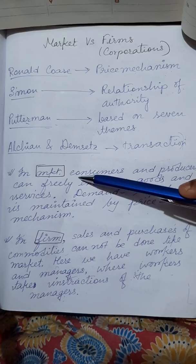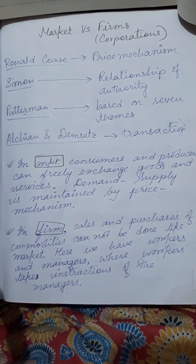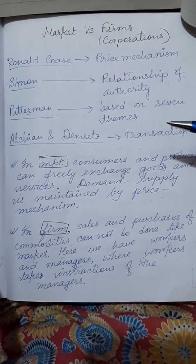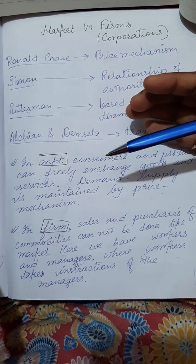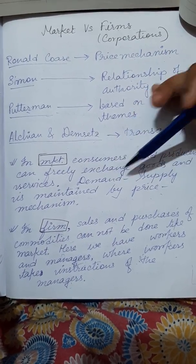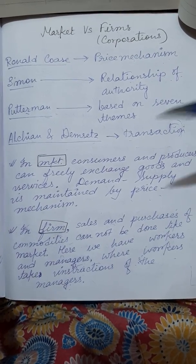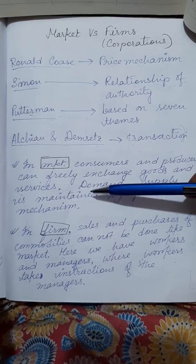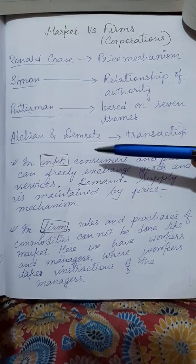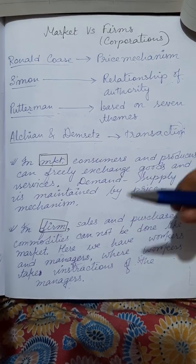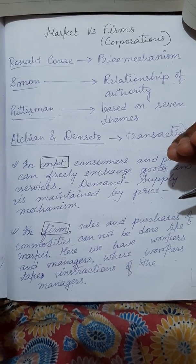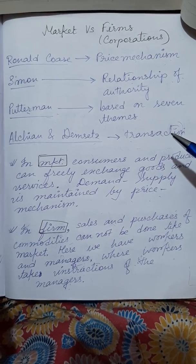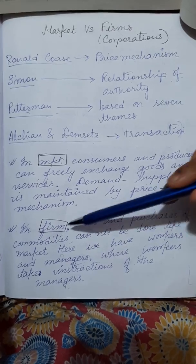A market is a place where consumers and producers exchange goods and services with each other. All economic agents — be it a producer or consumer — are free, meaning no one is giving them instructions; they can take their own decisions while exchanging goods and services. There is no higher authority to give them instructions. In an excess demand or excess supply situation, it can be adjusted through a change in prices — that is how demand and supply is maintained. So there exists a price mechanism in the market.